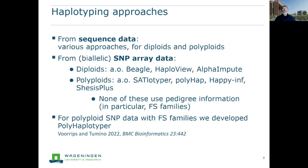There are various possibilities to obtain haplotypes and haplotype genotypes. Of course, you can do it using sequence data, and later today we will hear examples of that. From SNP array data, this has already been done for a long time in diploids — there are well-known packages like Beagle, Haploview, and AlphaImpute. But for polyploids, there's less software available. There are some examples: SUPLotyper, PolyHap, HapPyInf, and TetraOrigin.